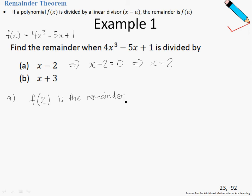So to find the remainder, we simply find f(2). How do we find f(2)? All we need to do is substitute x equals 2 into the given polynomial.